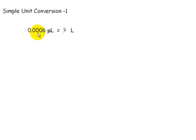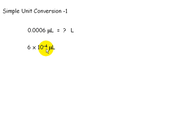For unit conversion, we change this number to scientific notation. That's 6 times 10 to the negative 4, because we go 4 places to the right.